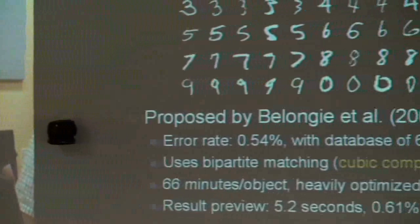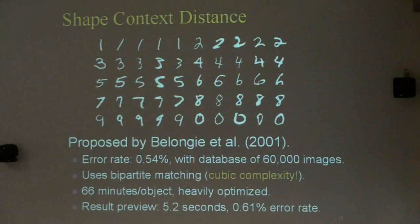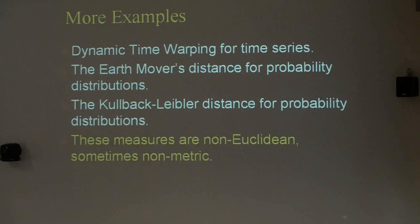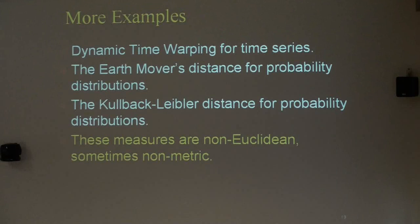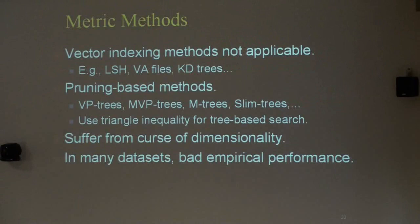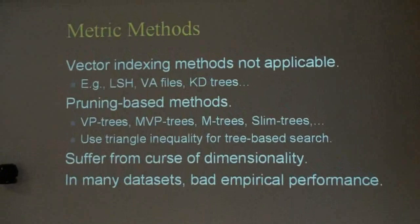More examples of computationally expensive distance measures include dynamic time warping, the edit distance, the Earth Mover's distance, and the Kullback-Leibler distance. Obviously these measures are non-Euclidean — we're not dealing with vectors when measuring the edit distance of strings. It's also important to mention that some of these measures are non-metric: dynamic time warping and the Kullback-Leibler distance don't obey the triangle inequality, and Kullback-Leibler is also not symmetric.